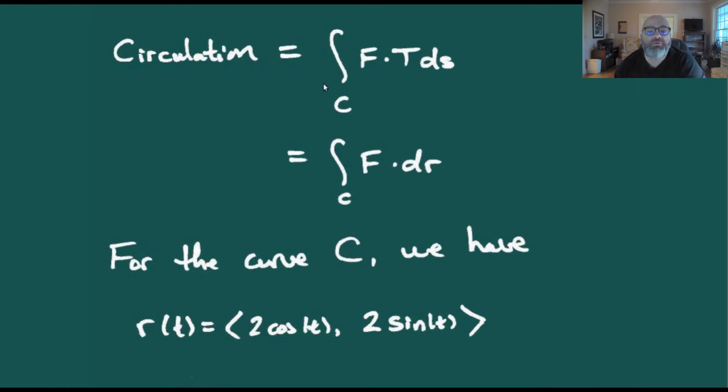For the circulation, what we really want to calculate is the integral over the curve of F dot T ds. Well, T was going to be the derivative of our parameterization divided by the length of the derivative, and ds was the length of our derivative times dt. So the lengths cancel out in that case and we get this is actually the same integral as if we were calculating the integral of F dot dr.